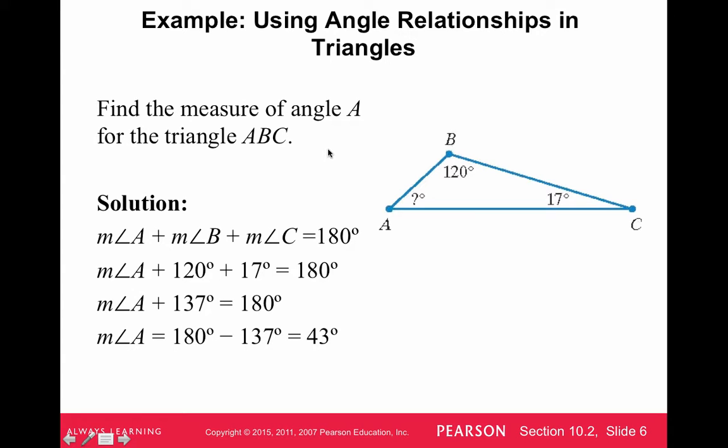So let's look at an example. Let's say we have this triangle where angle B is 120 degrees, angle C is 17 degrees, so what would angle A be? It's a pretty simple problem. We just know that they add to 180 degrees. We know two of the angles, so we add those two up and subtract that from 180, and we get 43 degrees.